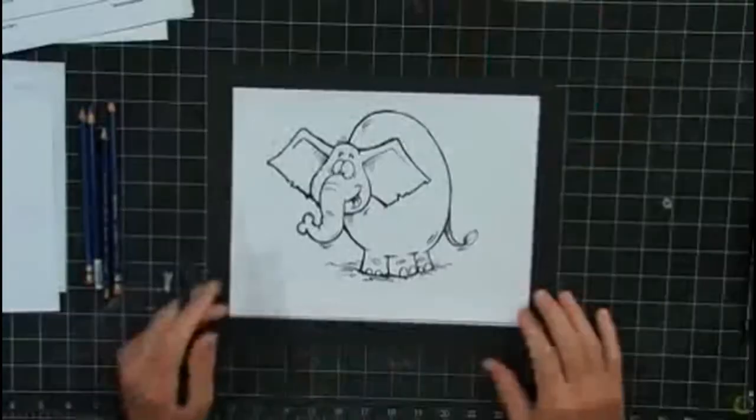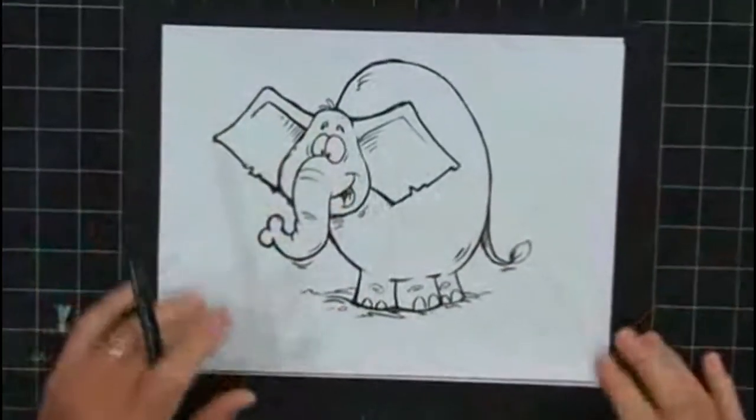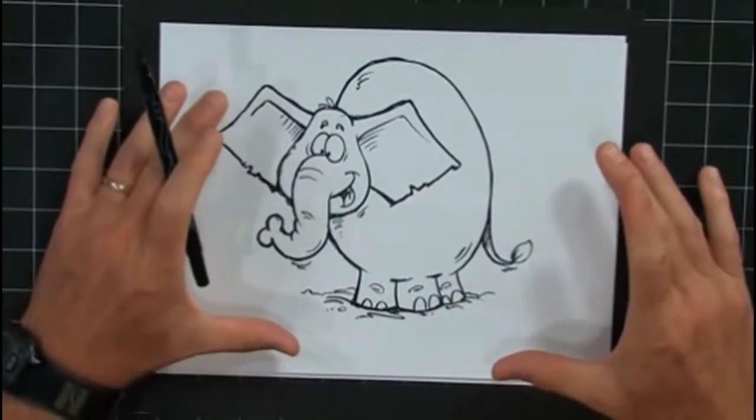Let's take a look at this elephant here. Looks kind of complicated. He's big, he's got these giant ears, feet. How can we find simple shapes in this elephant to make it simpler for us to draw? Can you find some shapes in this elephant?